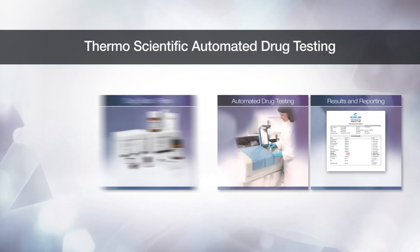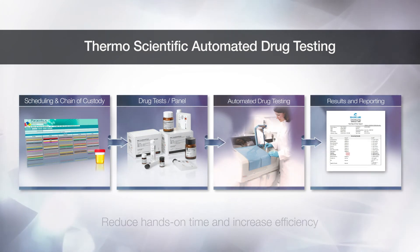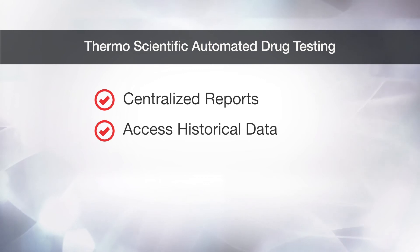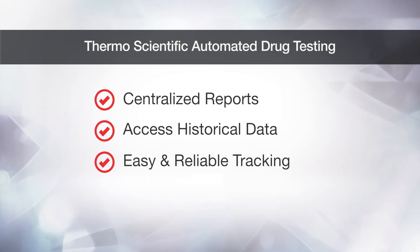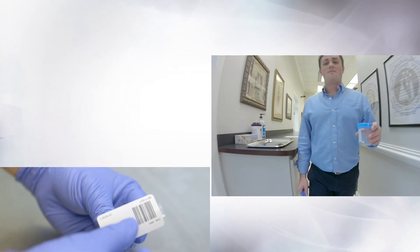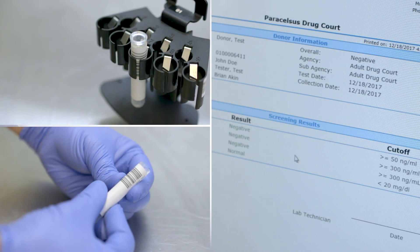Automating drug testing from chain of custody to testing and reporting reduces hands-on time and makes the in-house drug testing process more efficient. Such a solution keeps reports in one place with access to participants' historical data, making chain of custody and past-use tracking easy and reliable. With this integrated drug testing process, drug courts can now identify, track, and monitor with accuracy a participant's drug abuse habits.